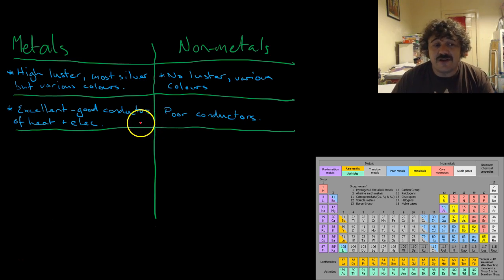Metals are excellent to good conductors of both heat and electricity. Non-metals, they just suck at it. They are poor conductors in general.